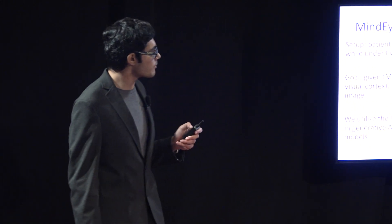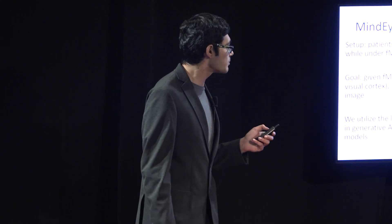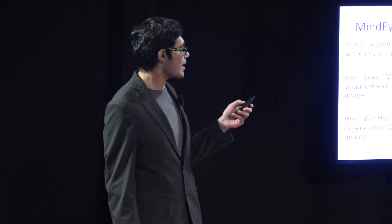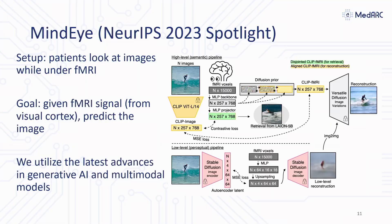We've also been working in the neuroscience space, where we have this mind-reading project where we take in the fMRI brain signal from a patient and reconstruct what the patient is seeing just from the brain activity of the patient. We're utilizing the latest advances in generative AI and multimodal models to be able to do that.